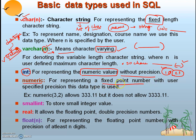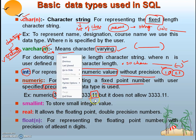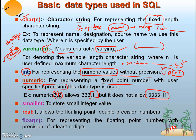NUMERIC represents a fixed-point number with user-specified precision, meaning it allows decimal points. Two values are provided in the bracket: the first is the number of digits allowed before the decimal point, and the second is the number of digits allowed after. For example, NUMERIC(3,2) allows up to 3 digits before and 2 digits after the decimal, so 333.11 is valid but 3433.11 is not.